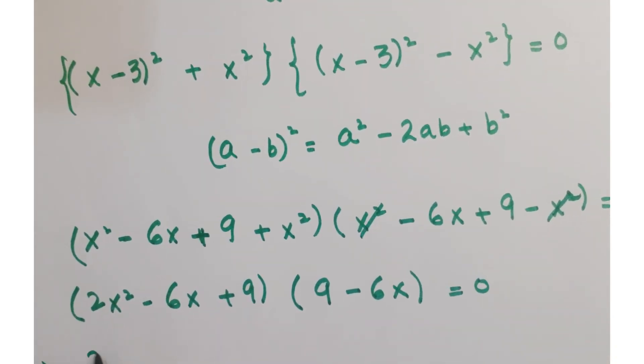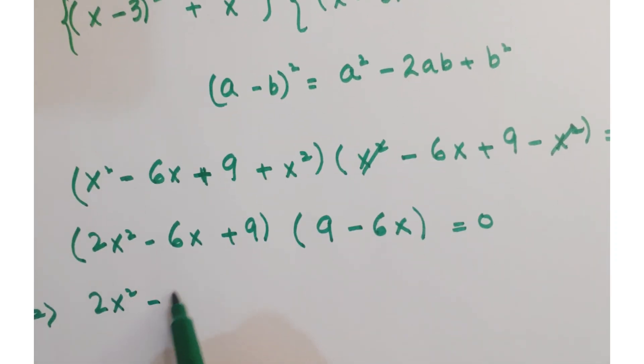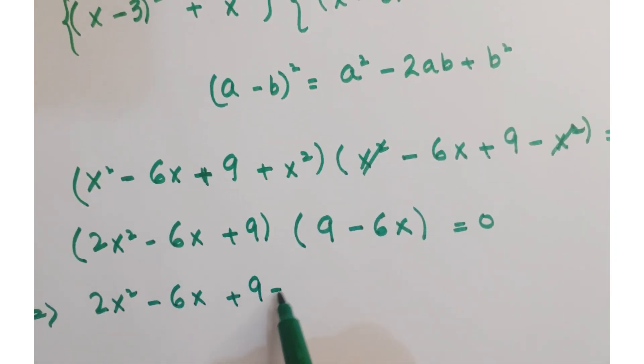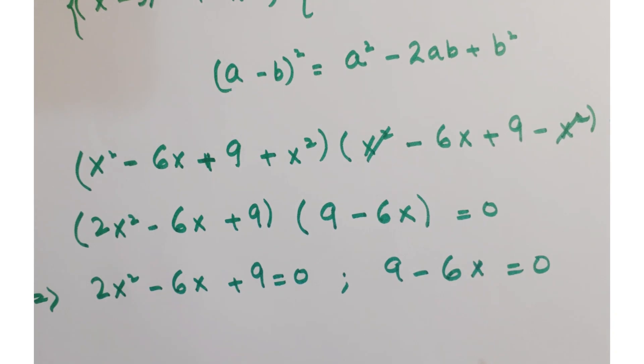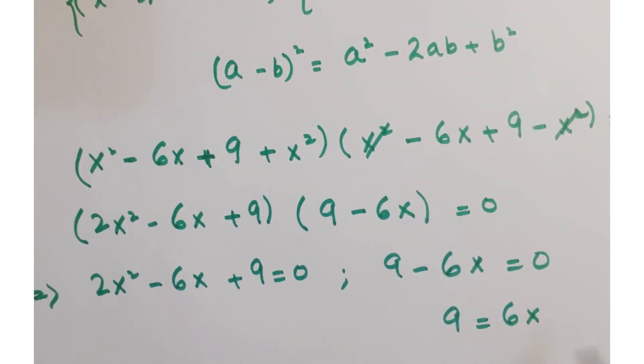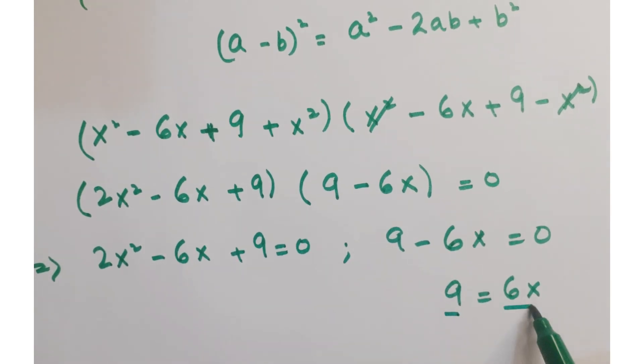Now this implies that 2x square minus 6x plus 9 is equal to 0 and 9 minus 6x is equal to 0. Working on this equation first, you can write it as 9 is equal to 6x. Now dividing by 6 on both sides,